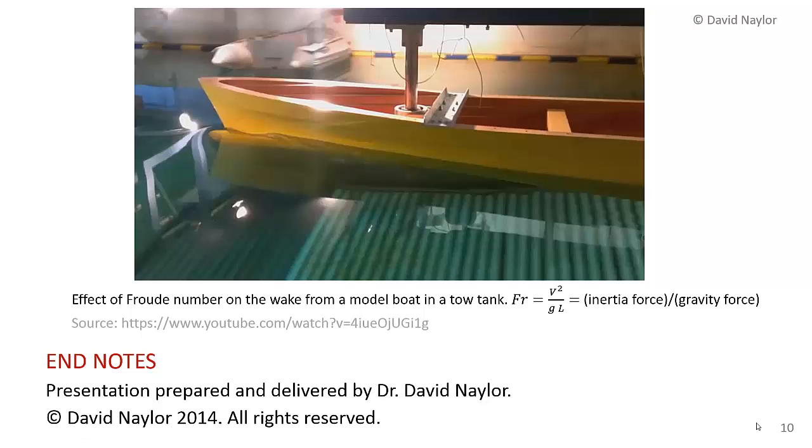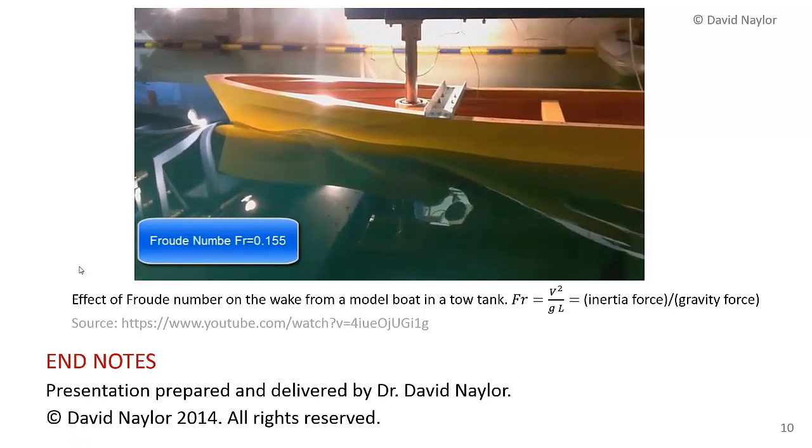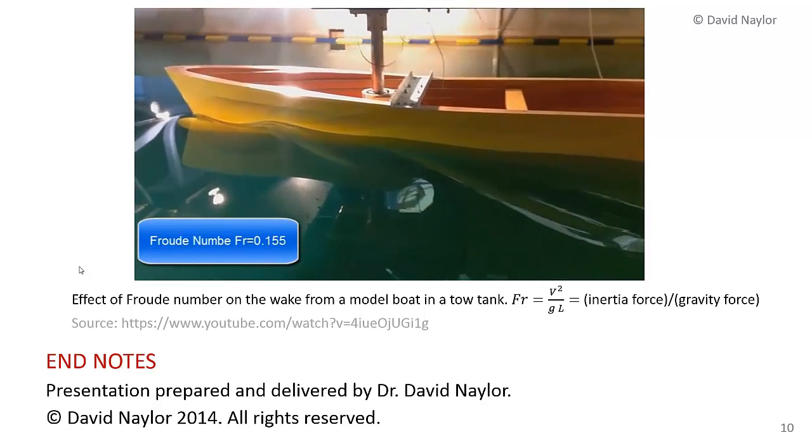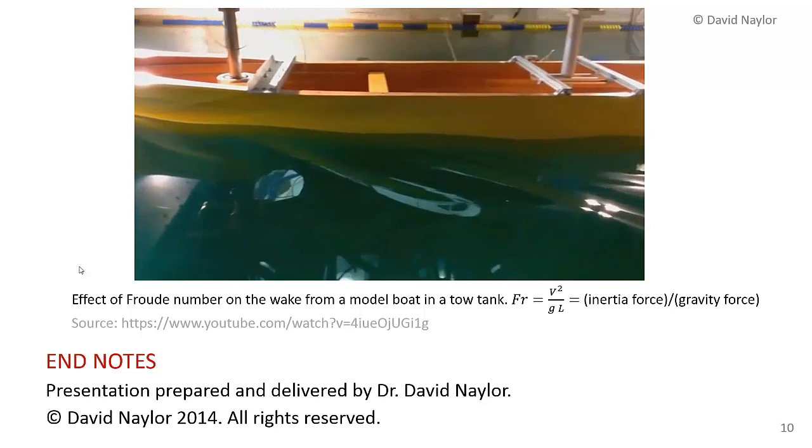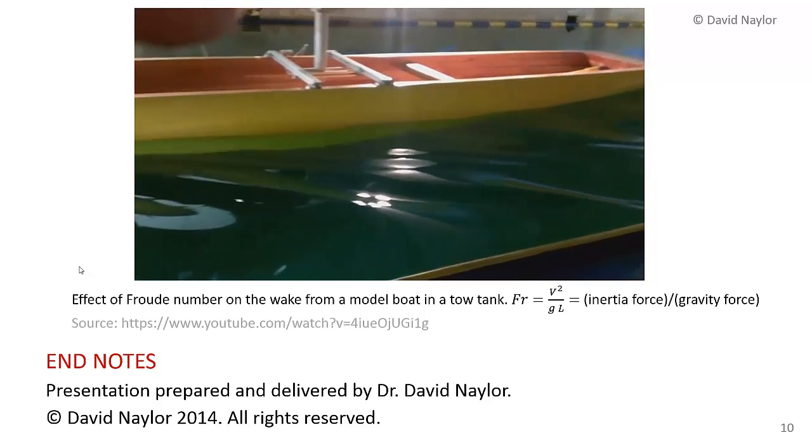I thought I'd end by showing a short YouTube video of a model boat being towed in a tank. This video shows the effect of Froude number on the wake, the bow wave that comes off the boat at two different Froude numbers. Remember the Froude number is the inertia force over the gravity force. The first test is at a relatively low Froude number, 0.155, based on the length of the boat. Just look at the nature of that wave. It's a nice, smooth, fairly non-turbulent wave coming off the boat.